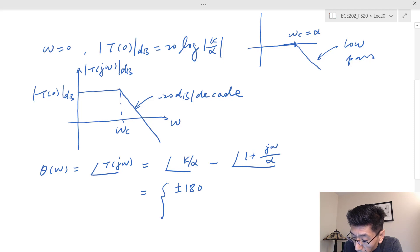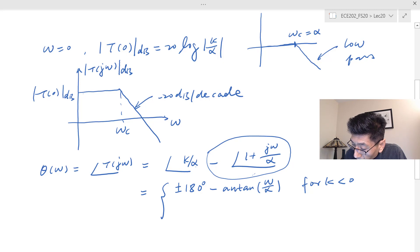Since alpha is positive, it will not contribute to any phase angle. It depends on the phase angle of k. If k is negative, we get 180 degrees. This term we know: at low frequency the angle is zero, at high frequency we have negative 90 degrees. We can write this as negative arctan(ω/α) for positive k.